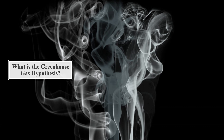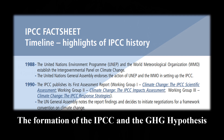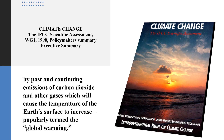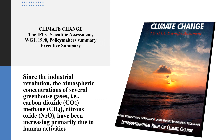But what is the greenhouse gas hypothesis? To answer that, we go back to the formation of the IPCC in 1988 and the production of its first report in 1990. The report explained that there is a concern that human activities may be inadvertently changing the climate of the globe through the enhanced greenhouse effect. The report further states that past and continuing emissions of carbon dioxide and other gases will cause the temperature of the Earth's surface to increase, popularly termed global warming. The report names the greenhouse gases of concern as carbon dioxide, methane, and nitrous oxide, and emphasises that the atmospheric concentration of these gases have been increasing primarily due to human activities.